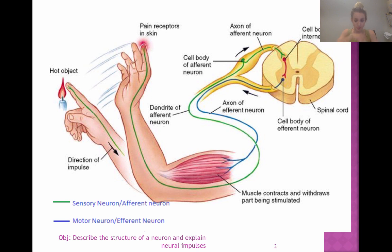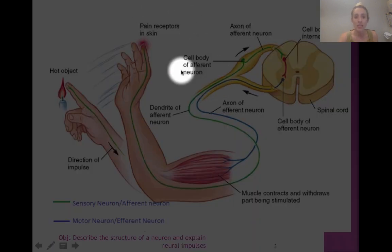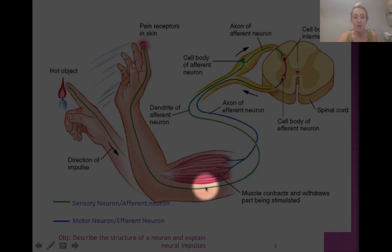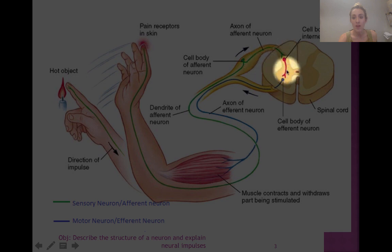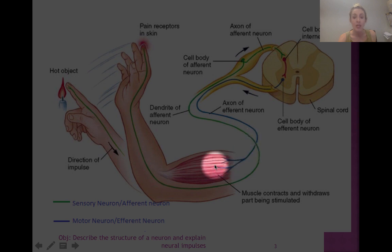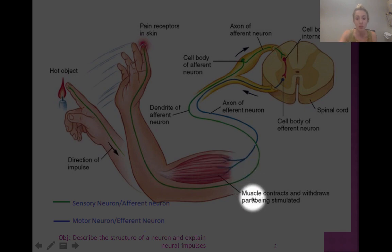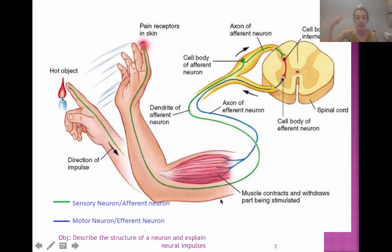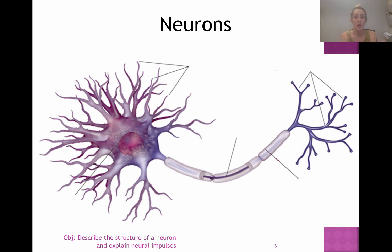This picture does a good job of showing afferent and efferent neurons. You can see the person touching something, and the green represents the sensory or afferent neuron going up into the spinal cord. The spinal cord contains the interneuron, and then the signal goes back out with the efferent or motor neuron to the muscle — because motor neurons control muscle movement. You can see the muscle contracts. So afferent goes in, and motor goes out.